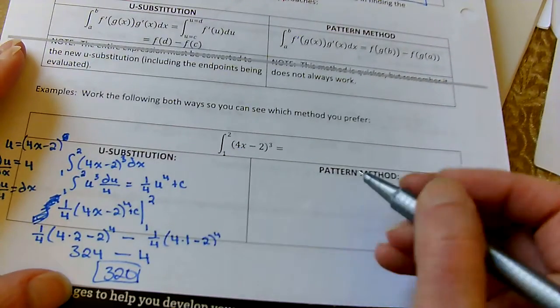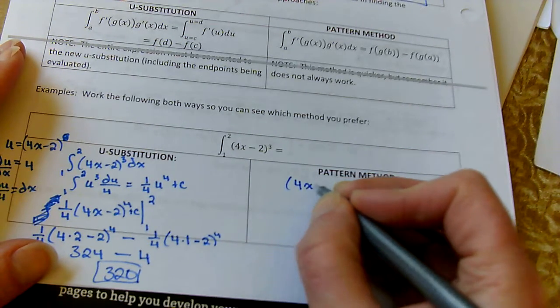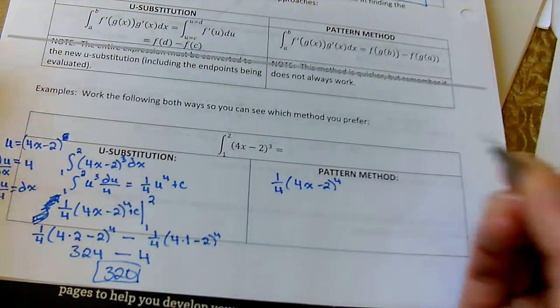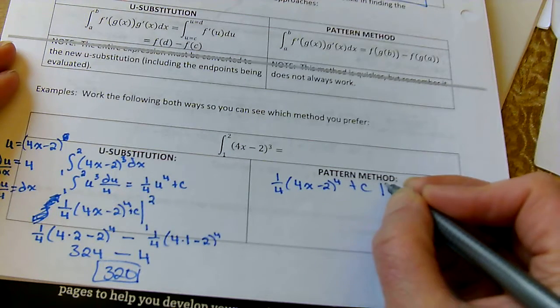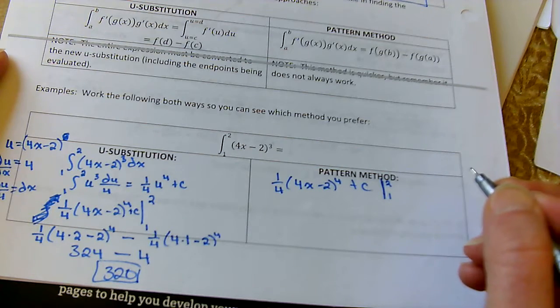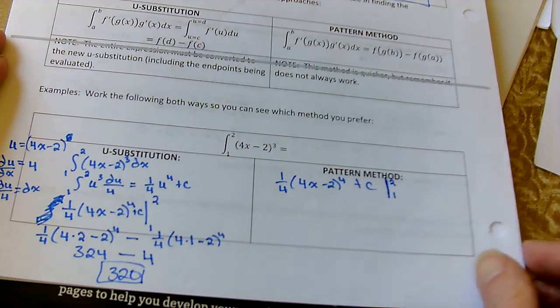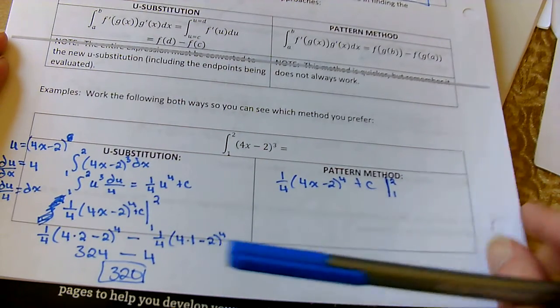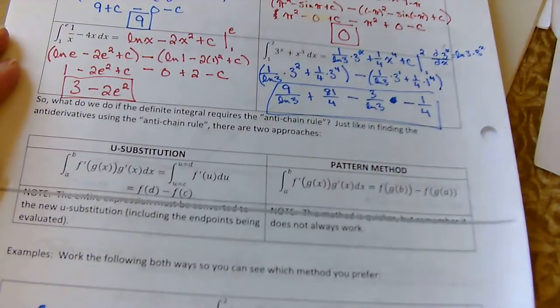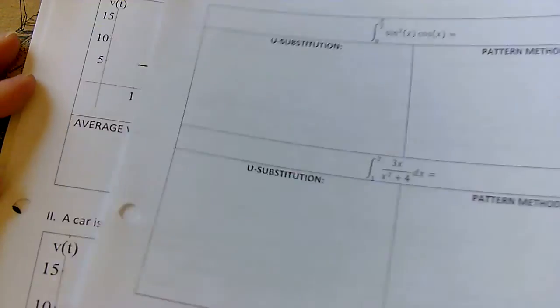The pattern method, I know this is going to be (4x minus 2) to the 4th divided by the derivative of the inside. I find the pattern method a lot faster than U substitution. We come out with the same antiderivative and they would plug in and get exactly the same thing we got there. Let's go through another couple of examples.